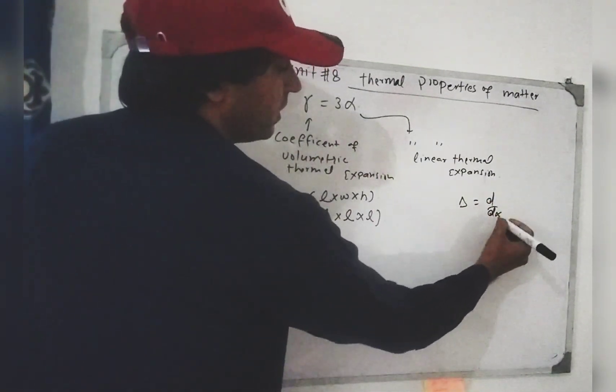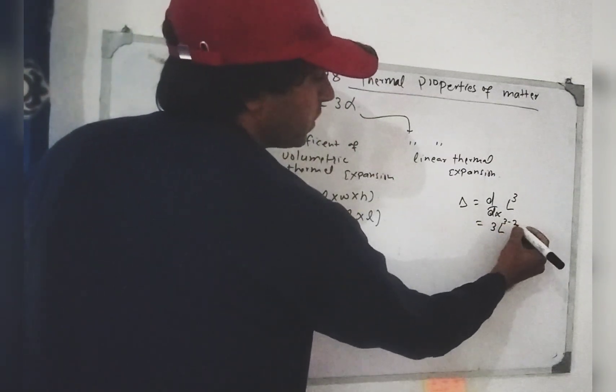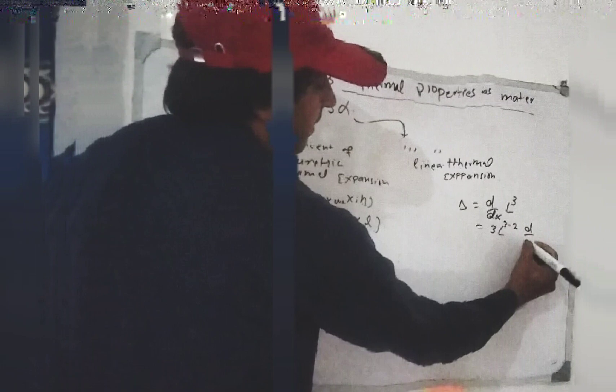Delta V is equal to delta of L cubed. Applying the power rule: the derivative is equal to 3 L squared, multiplied by delta L. So delta V is equal to 3 L squared times delta L.